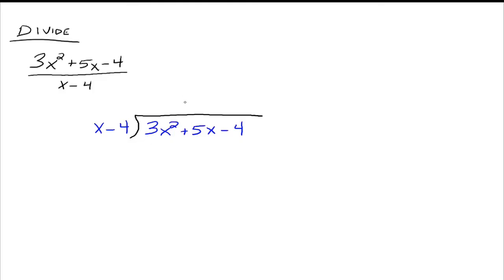That would be 3x. So we put the 3x up top, just like before with real numbers. Then you take what you put up top and multiply it times the divisor. We have to use the distributive property because we have a monomial 3x times a binomial x minus 4. So 3x times x is 3x squared, and 3x times negative 4 is negative 12x.